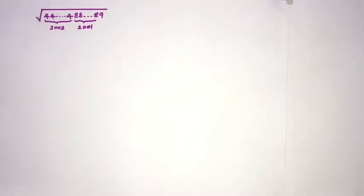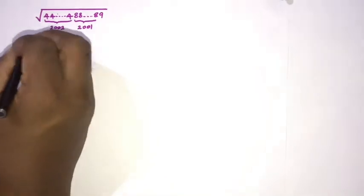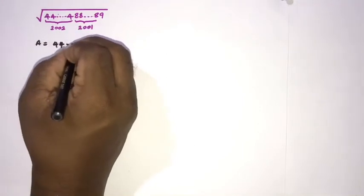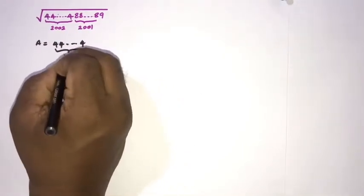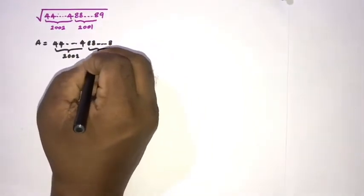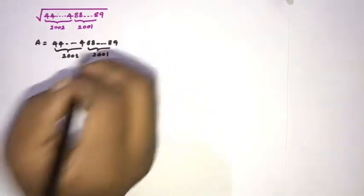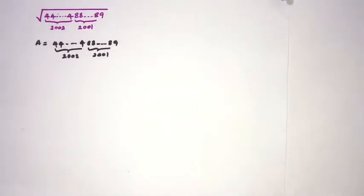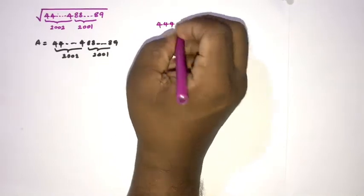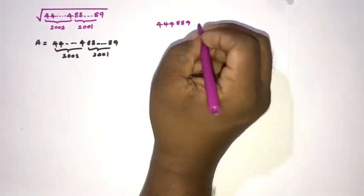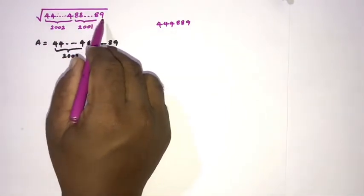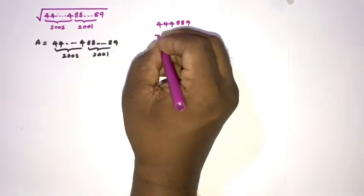First, I am going to let this number equal capital A. So A equals 4 repeated 2002 times, then 8 repeated 2001 times, then 9. For your understanding, I am going to take a small example: 4 three times, 8 two times, then 9, since we have 4 repeated 2002 times and 8 repeated 2001 times.